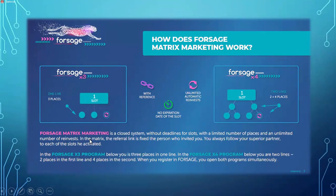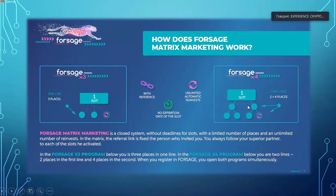As you can see here, in X3 on income slot one there is one row with three spots: one, two, and three. On Forsage X4 we have two rows — two places on the first row and four places on the second row. We'll get into that and explain how they work.